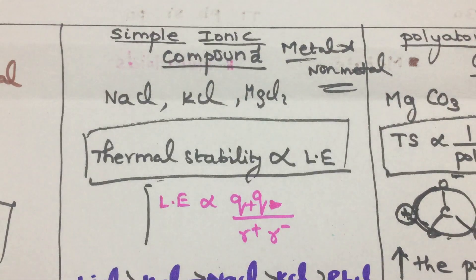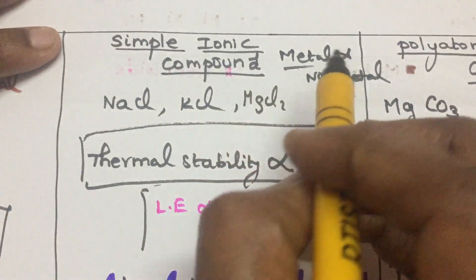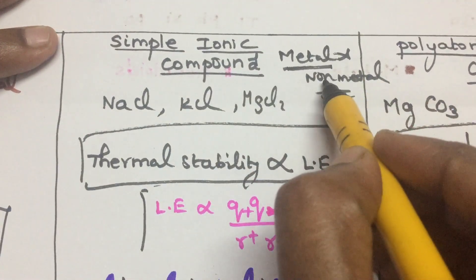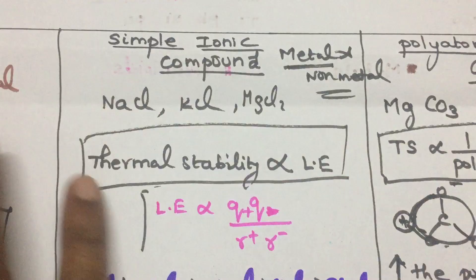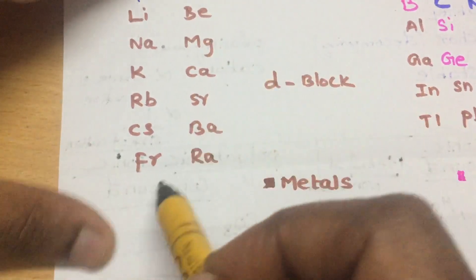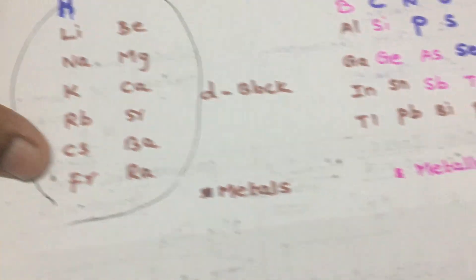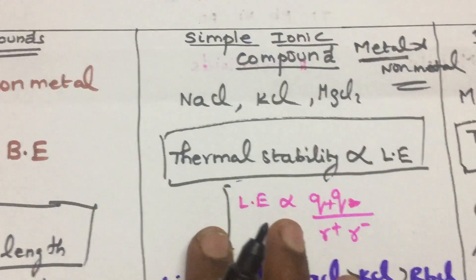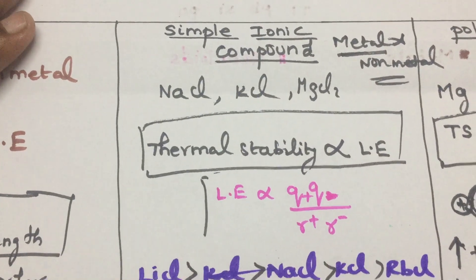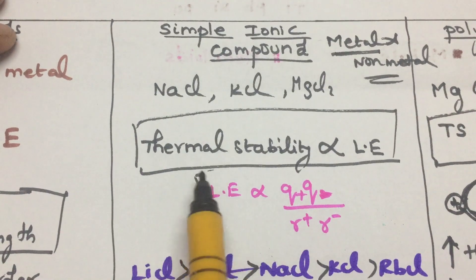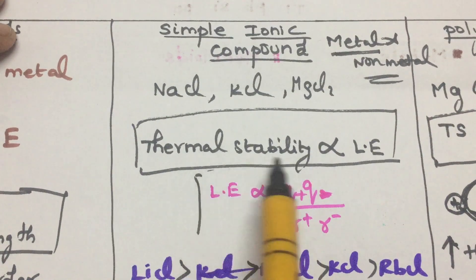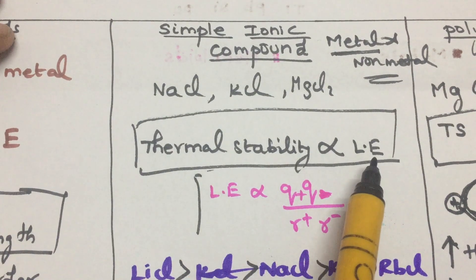Simple ionic compounds are formed between a metal and a non-metal, even including hydrogen. That is the identity of an ionic compound. For thermal stability, it is directly proportional to the lattice energy. For example, MgCl₂ has one magnesium, one chlorine, and one lattice energy.